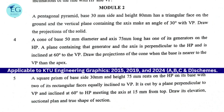A cone of base 50mm diameter and axis 75mm long has one of its generators on HP. A plane containing that generator and the axis is perpendicular to HP and is inclined at 60 degrees to VP. Draw the projections of the cone when the base is nearer to the VP than the apex.